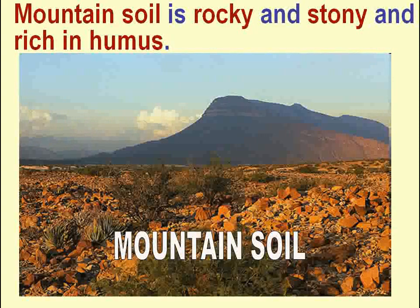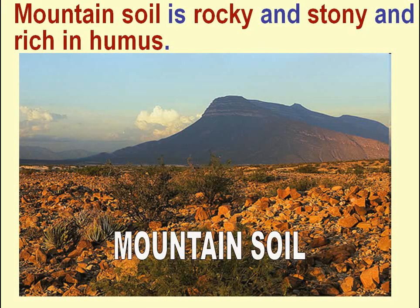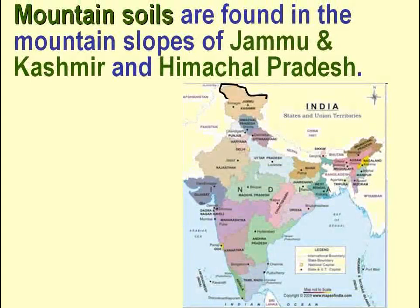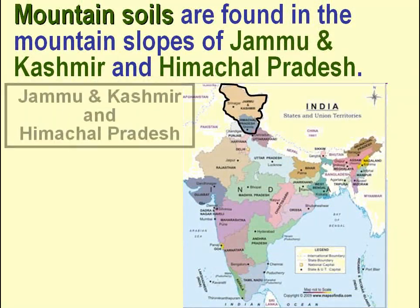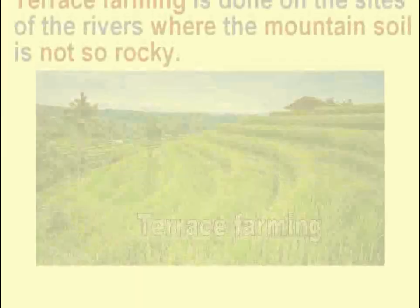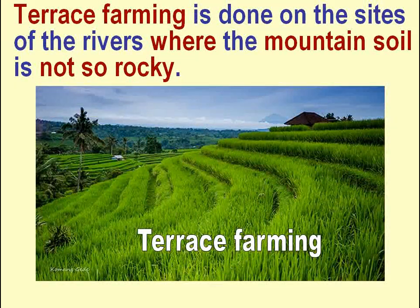Mountain soil is rocky and stony and rich in humus. Mountain soils are found on the mountain slopes of Jammu and Kashmir and Himachal Pradesh. Terrace farming is done on the sides of the rivers where the mountain soil is not so rocky.